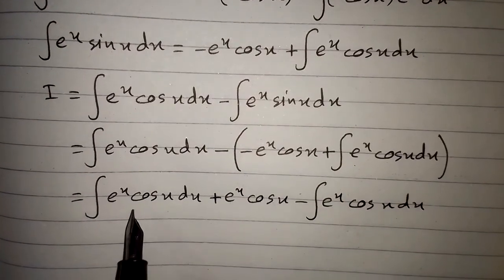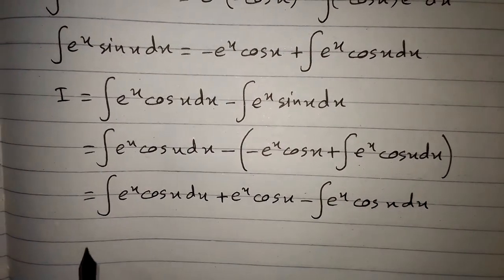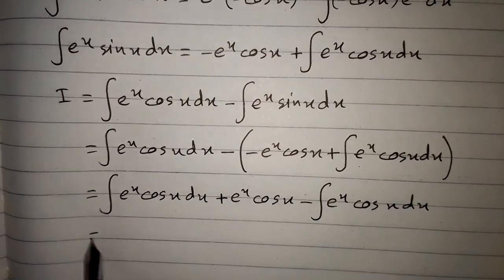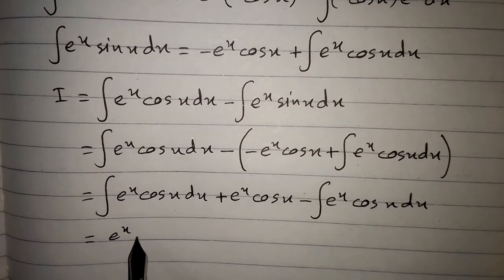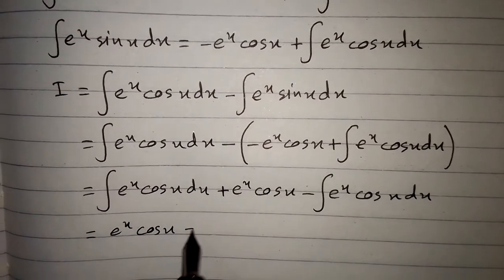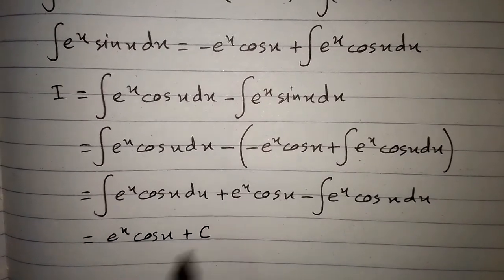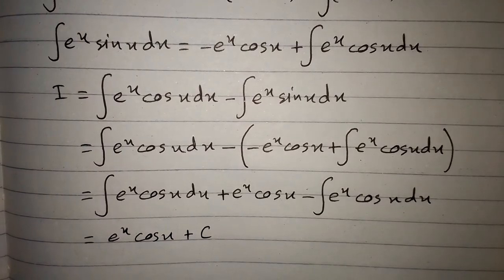Now these two integrals of e to the power x cos x cancel each other out, so we have i equals e to the power x cos x plus c, where c is the constant of integration.